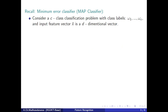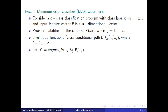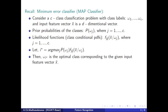Let's recall the Minimum Error classifier, also named as the MAP classifier or Bayes classifier. Consider C classes with labels omega 1 to omega c, and the input feature vector is a d×1 dimensional vector. The prior probabilities are P(omega j) for j=1 to c, and the likelihood functions are f(x̄ | omega j). We set i* = argmax of P(omega j) · f(x̄ | omega j), and omega i* is the optimal class corresponding to the given input feature vector x̄.